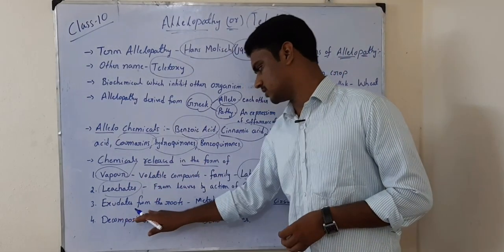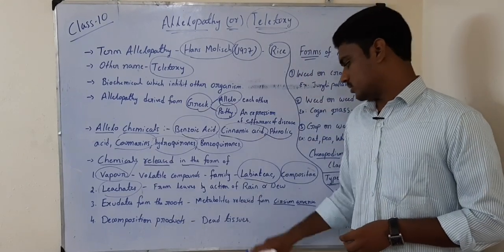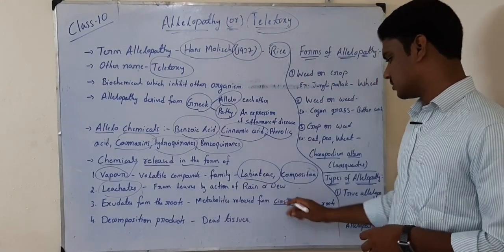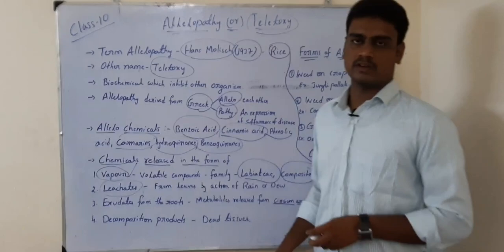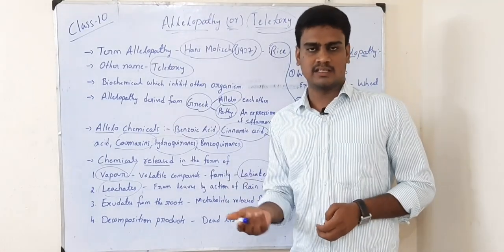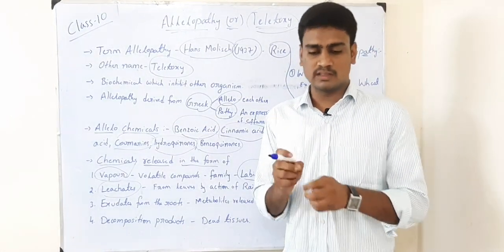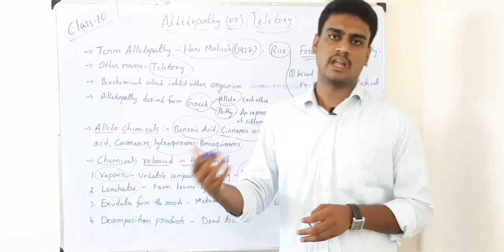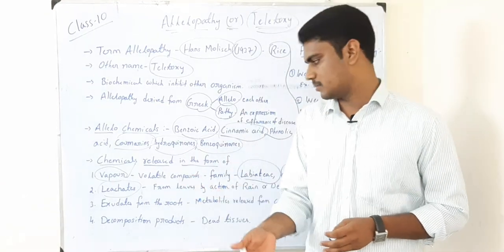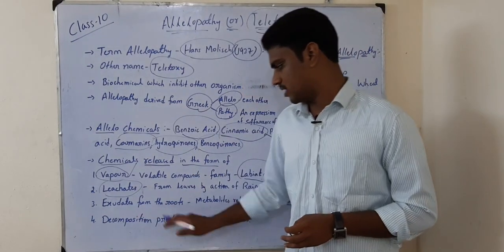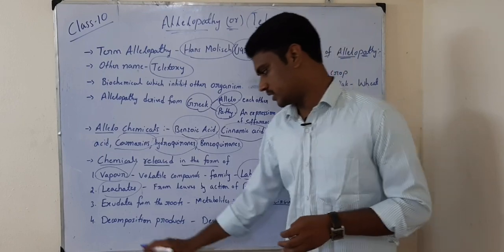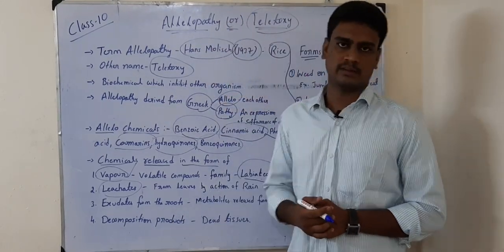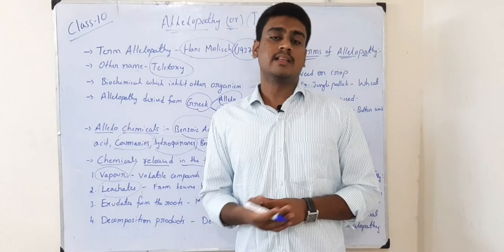The next form is exudates from the roots. For example, Cirsium arvense exudes allelochemicals from its roots into the soil, and those chemicals will affect other plants. That is called exudates from the roots.